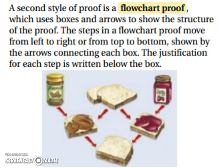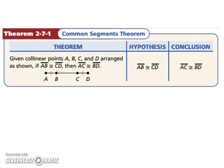Let's look at a theorem: the Common Segments Theorem. Given collinear points A, B, C, and D arranged as shown, if segment AB is congruent to segment CD, then AC will be congruent to BD.